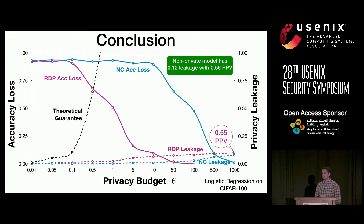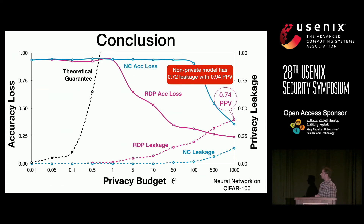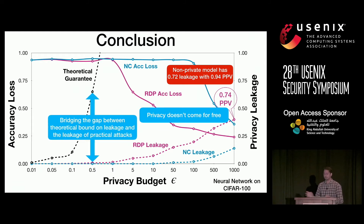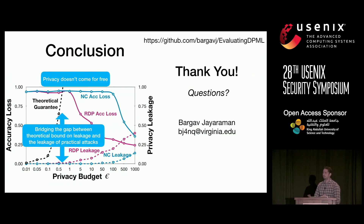To wrap up: for the logistic regression model, even the non-private model was secure enough, so there was no meaningful privacy leakage. For the neural network model, there was significant privacy leakage even in the non-private model, and while the private models reduced leakage, a significant amount remained. Privacy doesn't come for free, at least not in all cases. The most significant takeaway across all settings is the huge gap between the theoretical upper bound on privacy leakage and what we observe in practice. We believe there are attacks more capable than those currently available, and bridging this gap should be the direction of future research.